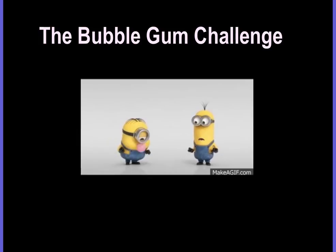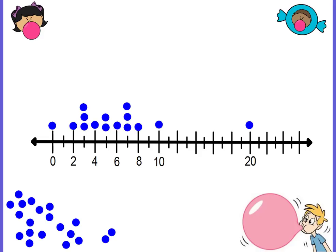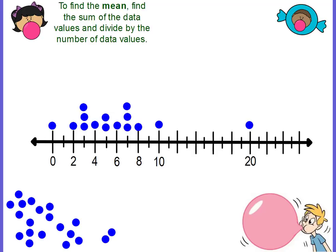The bubblegum challenge — it's been done for you, I just made up one. This is our dot plot, and there are things you can find from it. The first thing you can find is the mean. Remember, to find the mean, we add them up and then divide.